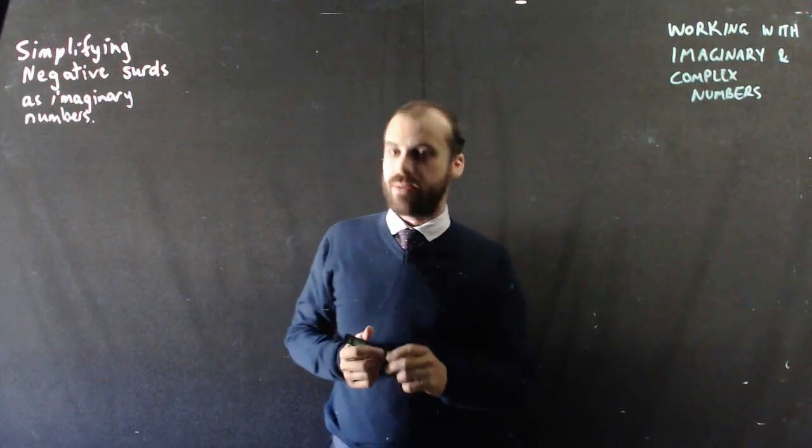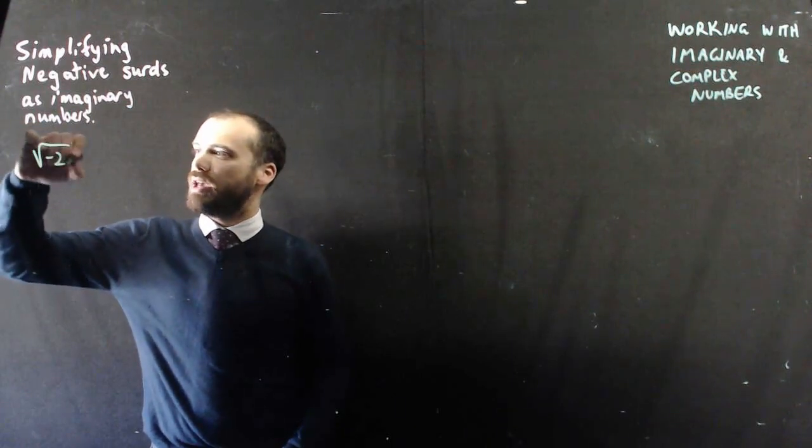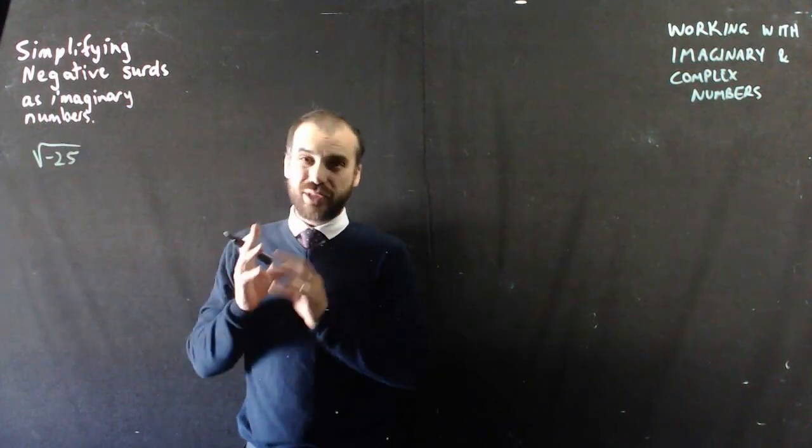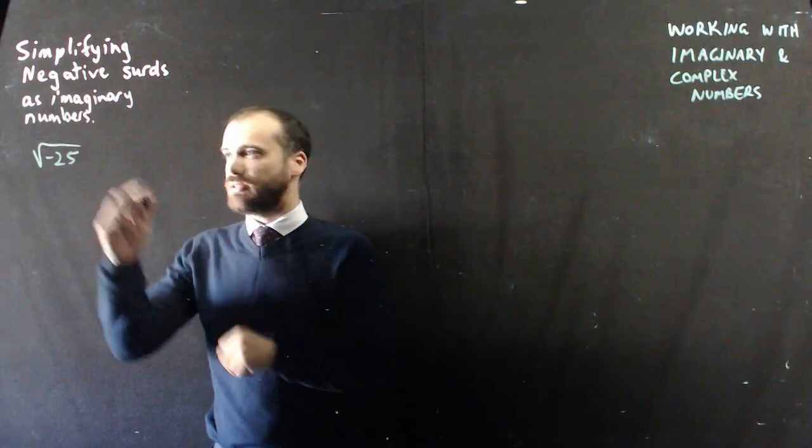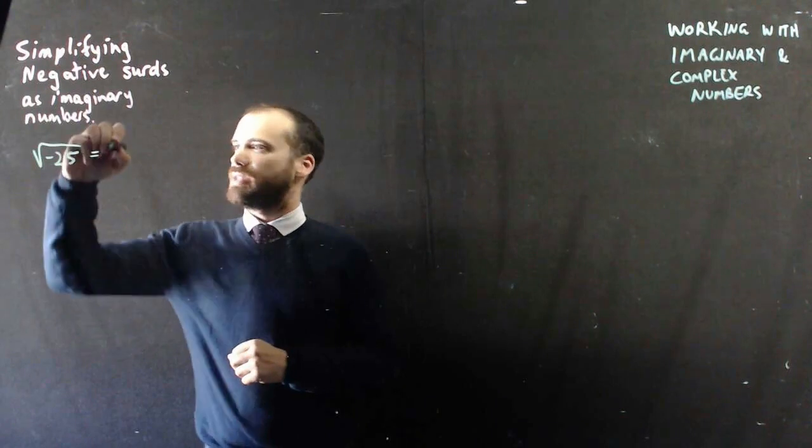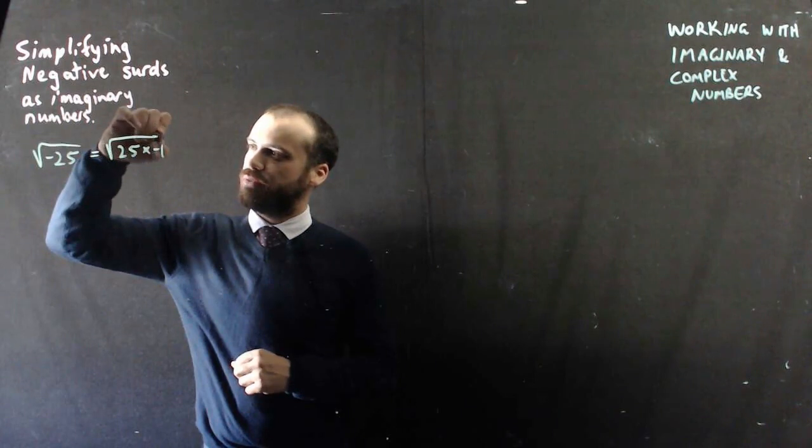Simplifying negative surds as imaginary numbers. So let's say you've got the square root of negative 25. Well I can split that and it's always important to split it into a negative one and something else, so I can say that that's the same as 25 times negative 1.